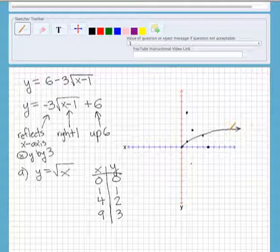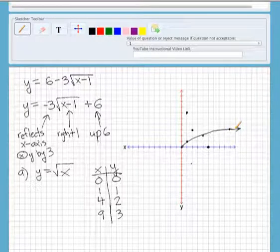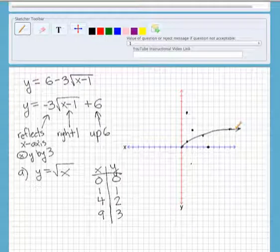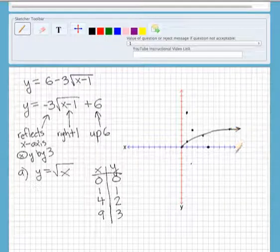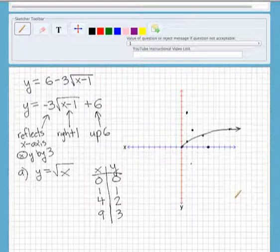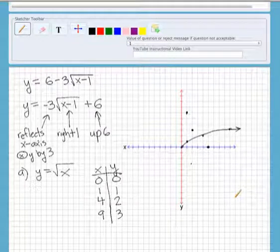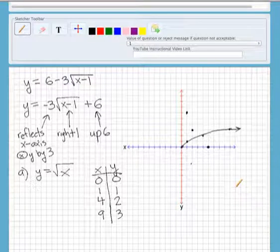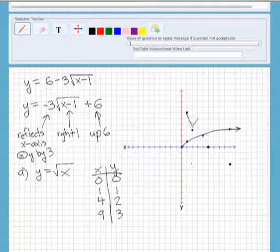And the last point is here. We'll go right 1, times it by negative 3. Well, the Y value of this point is 3, so that'll take us to negative 9. So 1, 2, 3, 4, 5, 6, 7, 8, 9. Then from there, we go up 6. So 1, 2, 3, 4, 5, 6. So that'll take us right there. So this graph is now going to look like this.